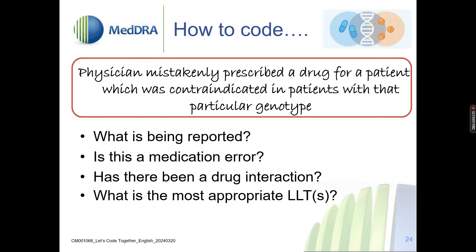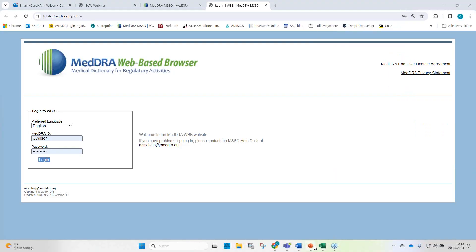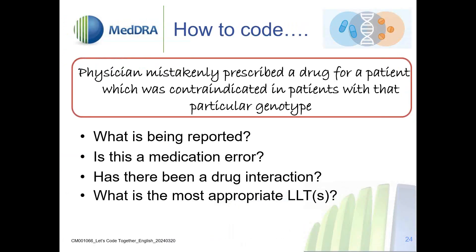Moving on to the next example. It is reported that the physician mistakenly prescribed a drug for a patient which was contraindicated in patients with that particular genotype. Do we understand what this is about? Does this verbatim refer to a medication error or something else? Is this a case of a drug interaction with a specific genotype? What would be the most appropriate LLT or LLTs?